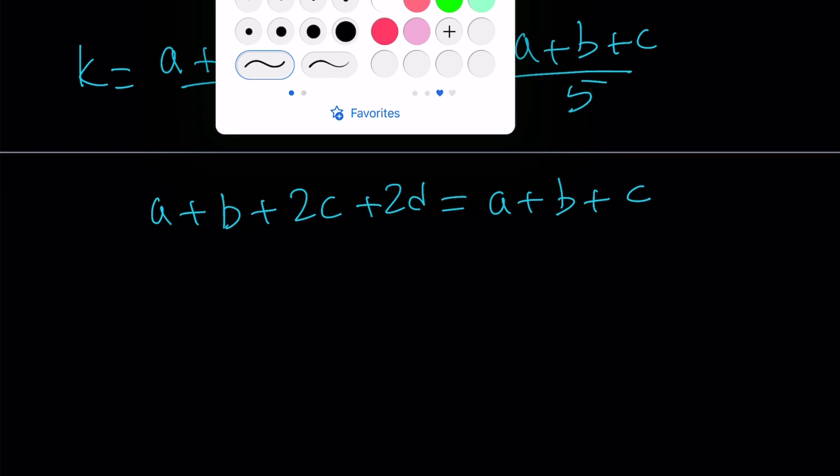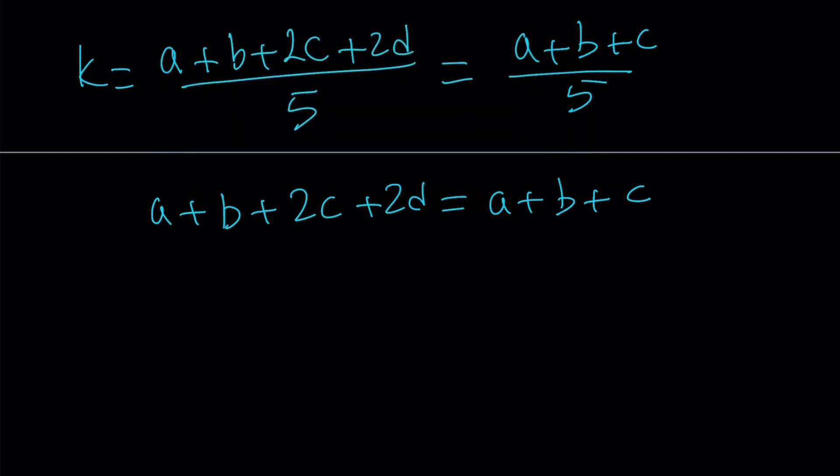From here, we can basically simplify this. We can cancel out some of the terms. For example, a plus b right away. Notice that I have a 2c here and a c here. If you subtract c from both sides, nothing is left on the right-hand side. Therefore, you end up with c plus 2d equals 0. What was I looking for? C plus 2d? Are you serious? We got the answer, yes. This is the end of the second method.